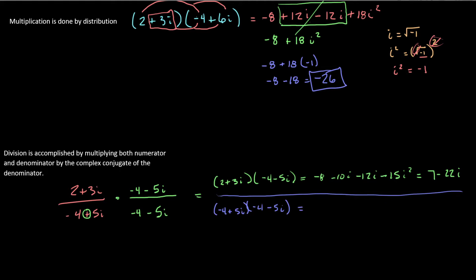If I distribute that, I get negative 4 times negative 4 is positive 16. Negative 4 times negative 5 is positive 20i. Positive 5 times negative 4 is negative 20i. And then I have 5 and negative 5 for negative 25i squared. And again, working it just like we did above, these two things are going to disappear.